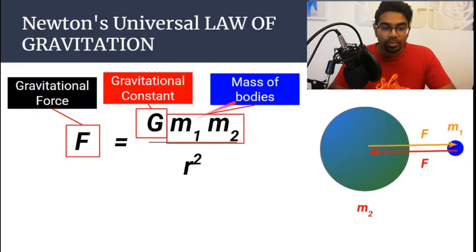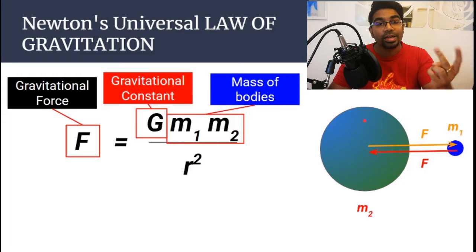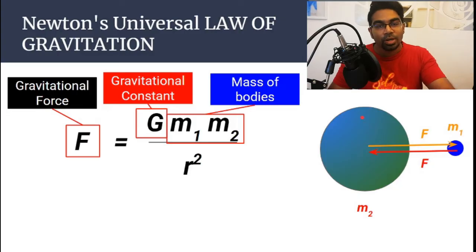The m's represent the mass of the body. Remember, gravitational force is between two bodies. For example, look at the picture on the right. Here we have m₁ is the mass of the smaller object here, and m₂ is the mass of the bigger object. Of course, it doesn't matter which one you assign m₁ and m₂. Anything can be m₁ or m₂.